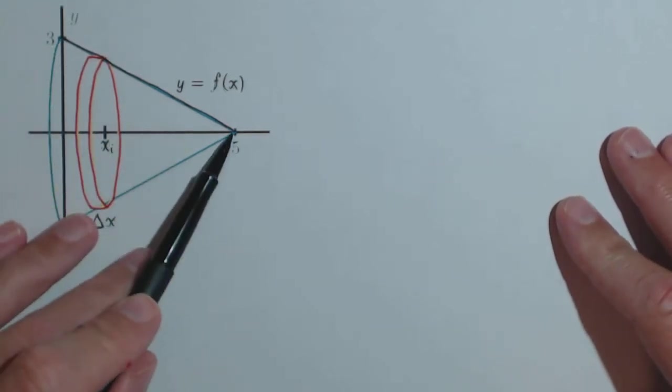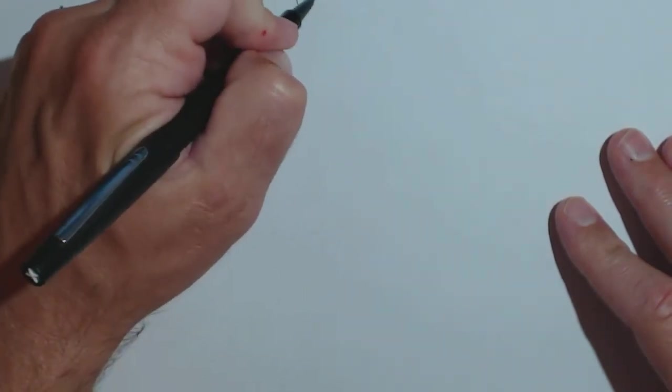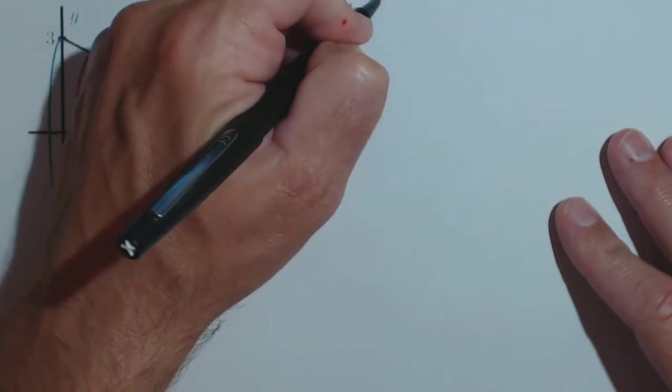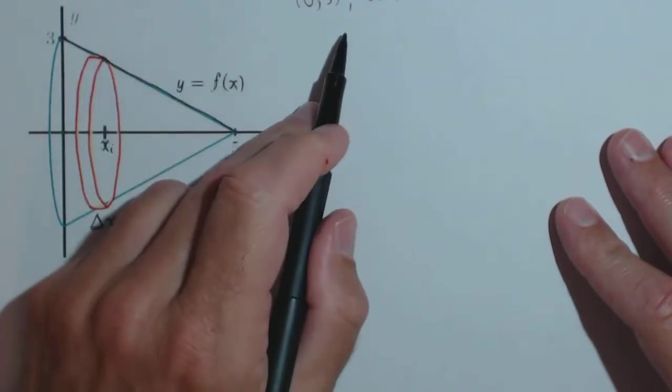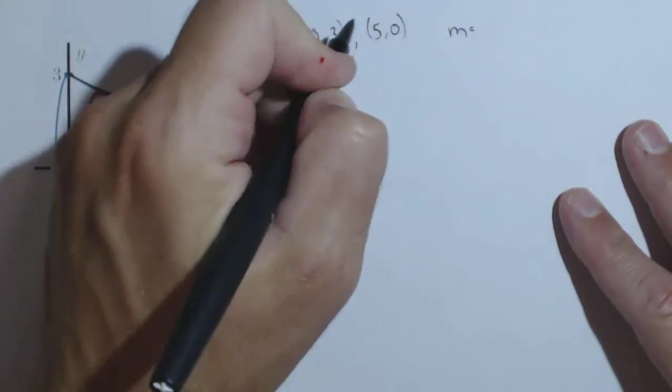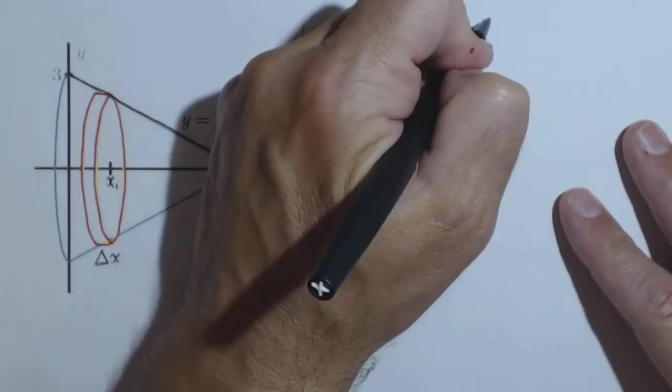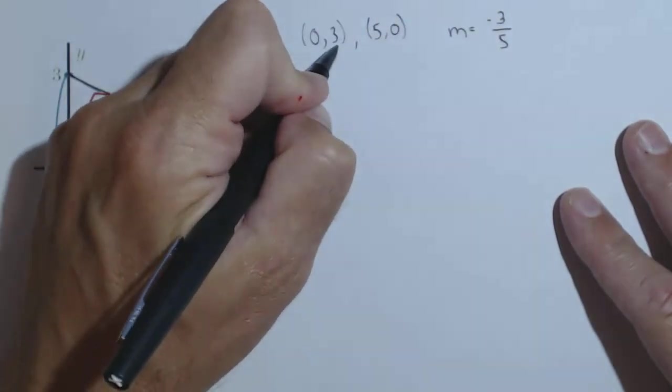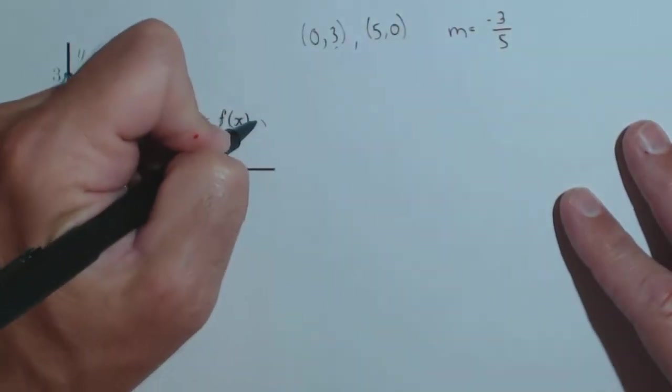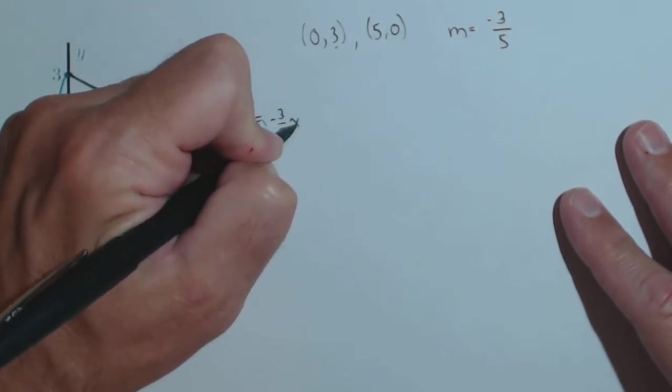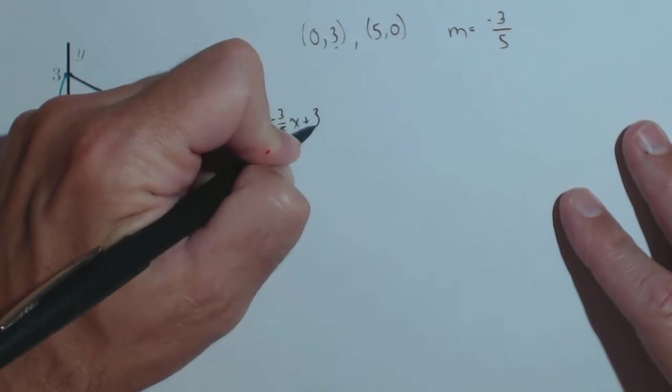So first thing we're going to do is find the equation of the linear function. Well, what we can see is it goes through the points (0,3) and (5,0). That means our slope of this linear function, we have a change in y, it goes down three as it goes over five, so our slope is -3/5, a y-intercept of three, so the equation of that function is -3/5x + 3.